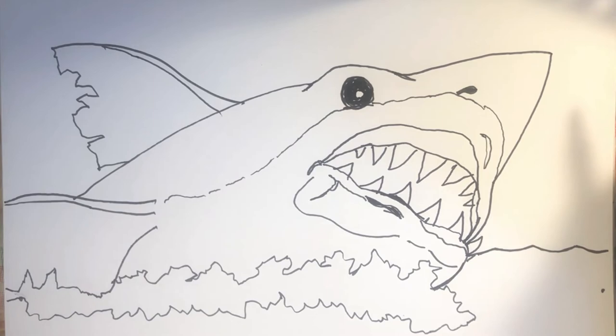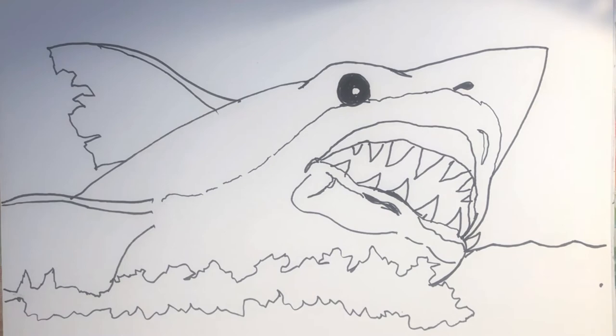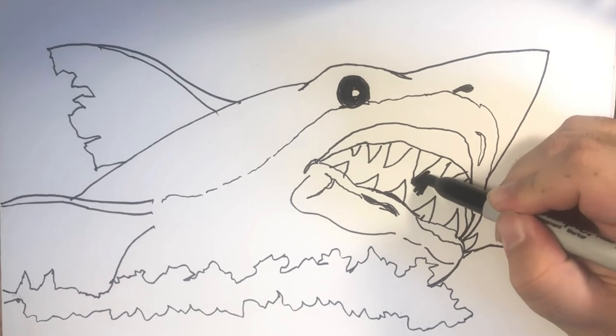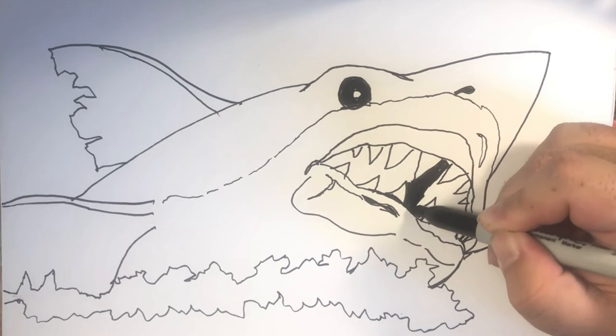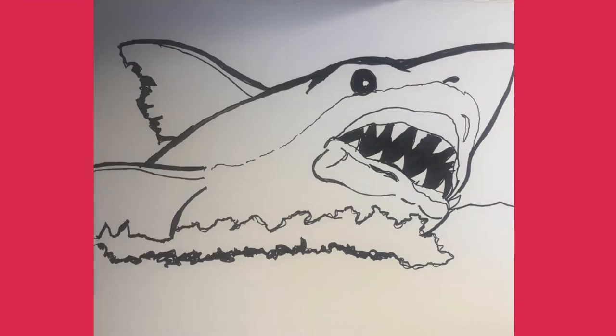I'm going to clean up the eye a little bit more. And what you need to do next is color in the inside of the mouth. You really want that to be where whoever's viewing your art, that's kind of where their eye goes. So we're going to add some depth by coloring around the teeth, just being careful not to accidentally color over the top of them.